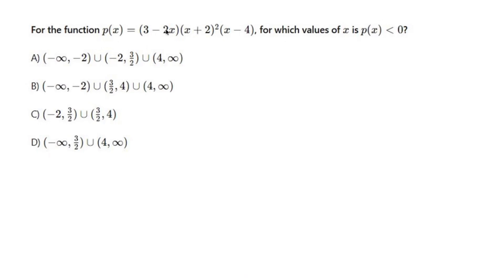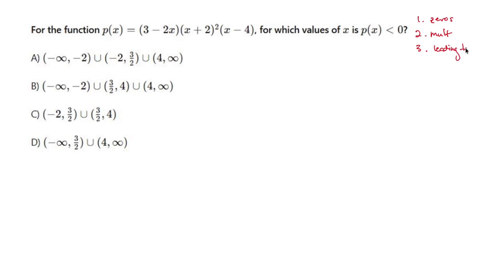We have ourselves a gross-looking polynomial. Whenever you're asked to find out where it's above or below the x-axis, you're looking at three things first: you need the zeros, you care about the multiplicity, and then you find your leading term so you know the behavior of the graph. So let's find our zeros first.